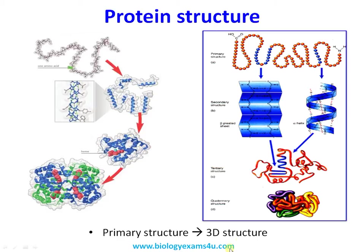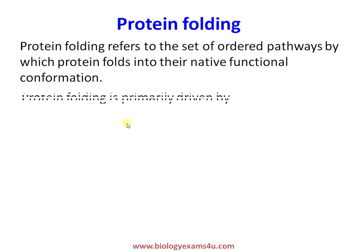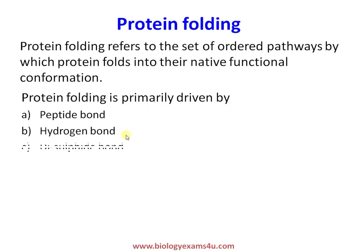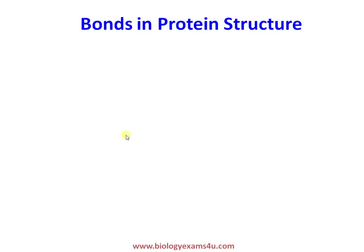The key point is that the amino acids in the primary structure determine the 3D structure of a protein. Protein folding is not a random process — it is a set of ordered pathways by which a protein folds into its native functional conformation, guided by bonds like peptide bonds, hydrogen bonds, disulfide bonds, and hydrophobic interactions.